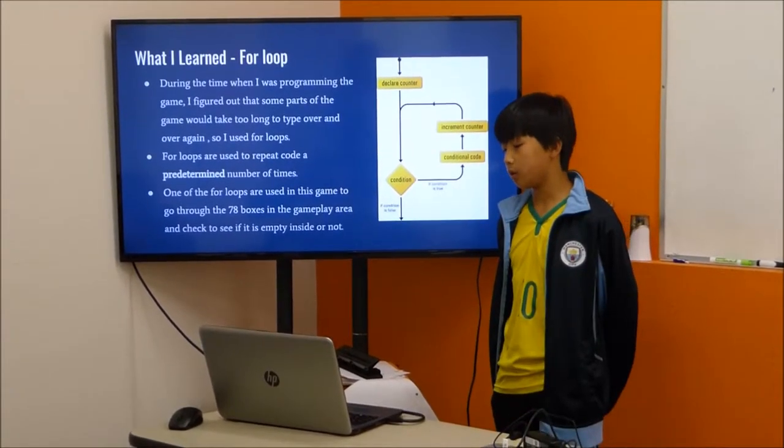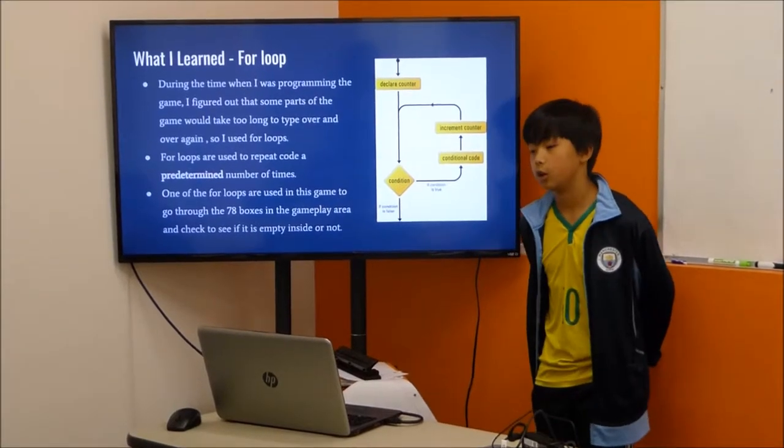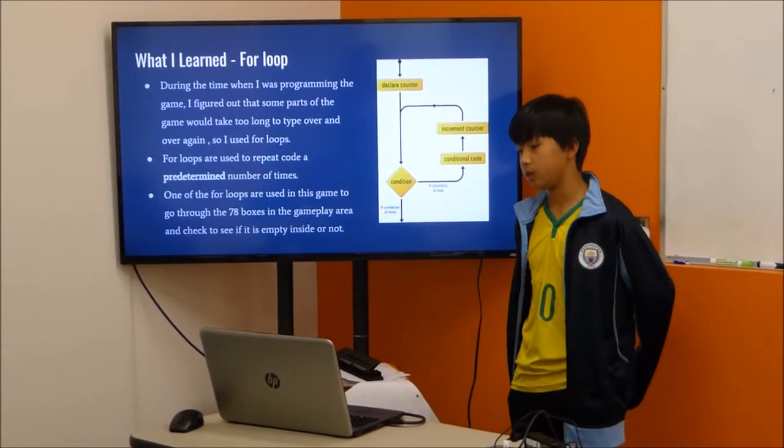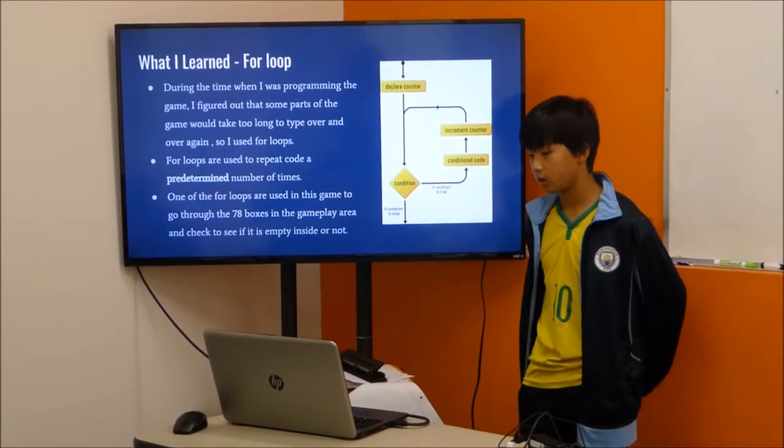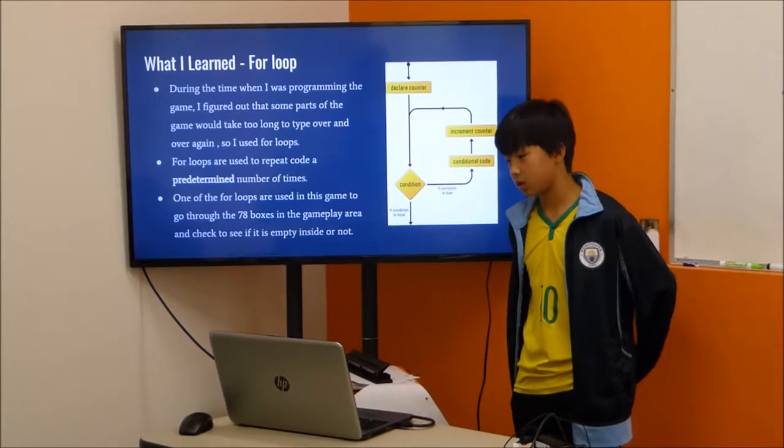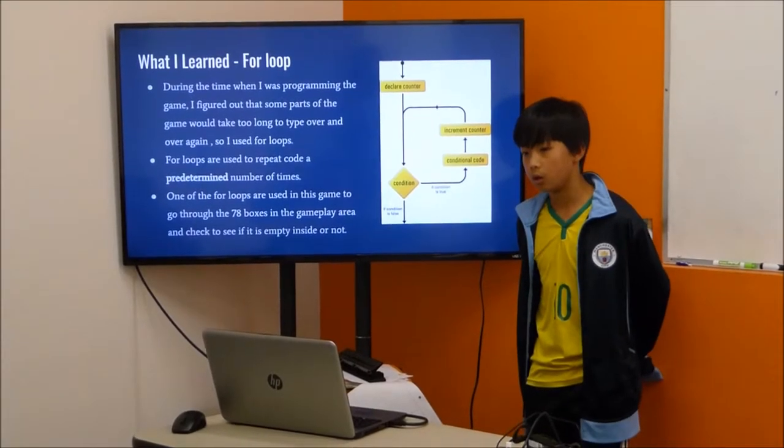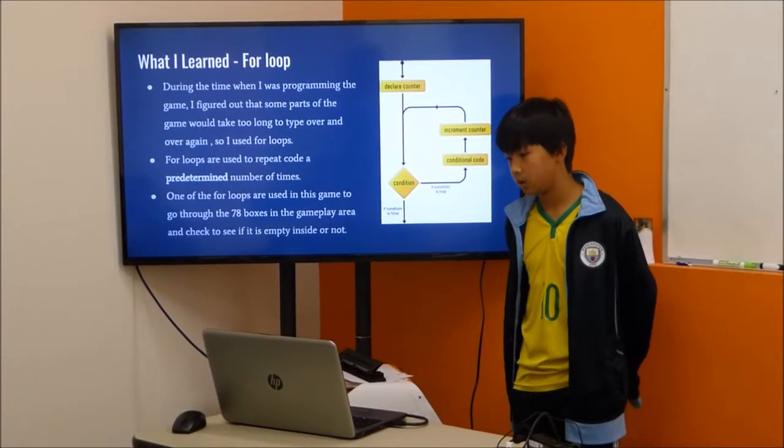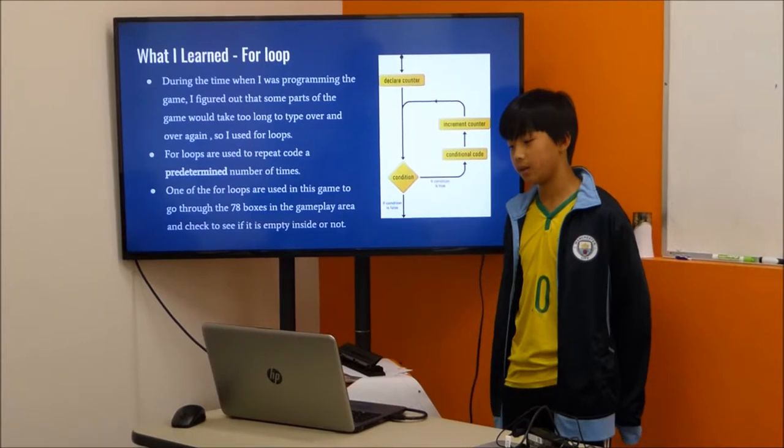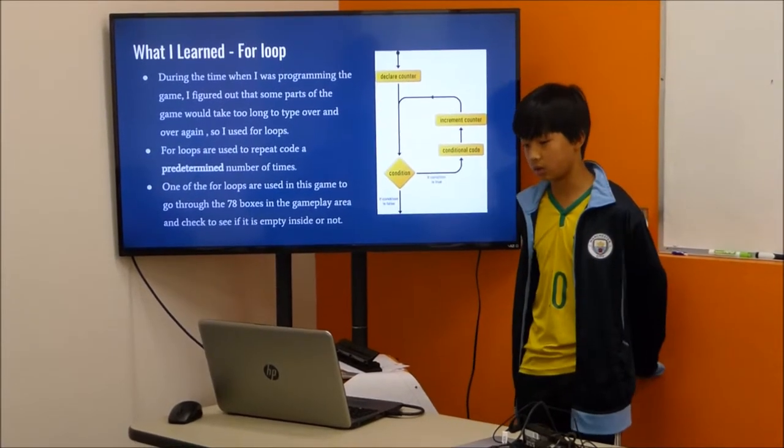There's four parts to a for loop. You have to declare a counter, then there's a condition, and then there's the code if the condition is true. Then you have to increment the counter, and then that keeps cycling until the condition is false.